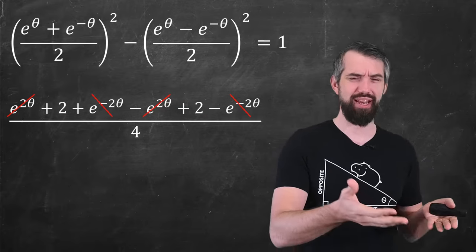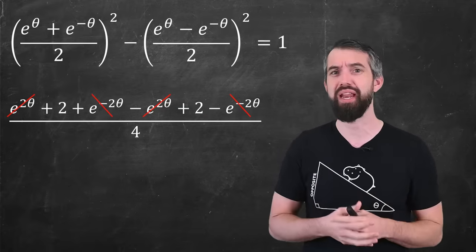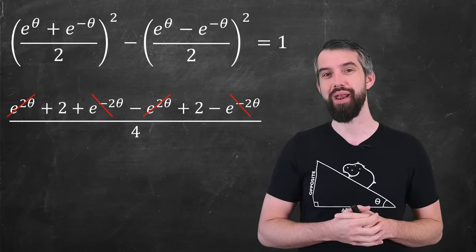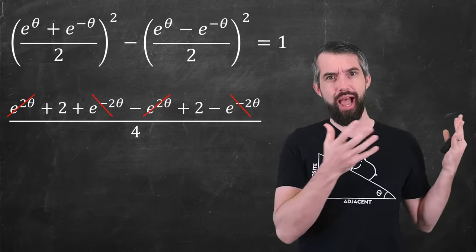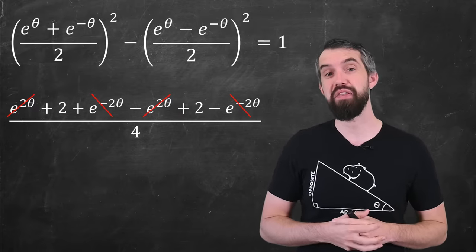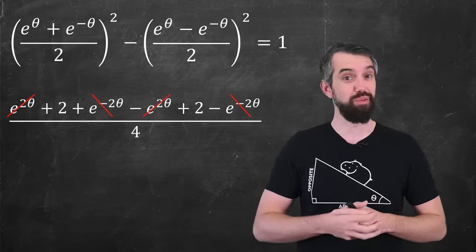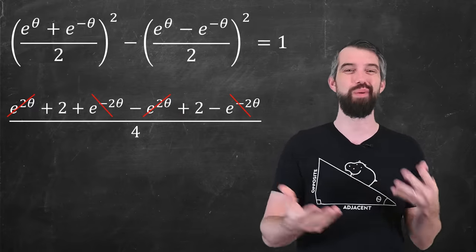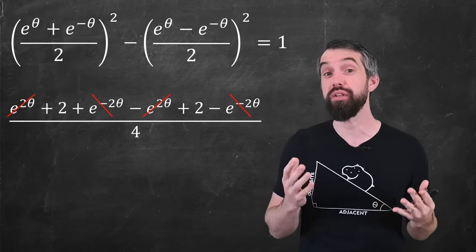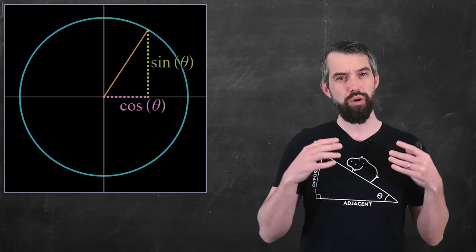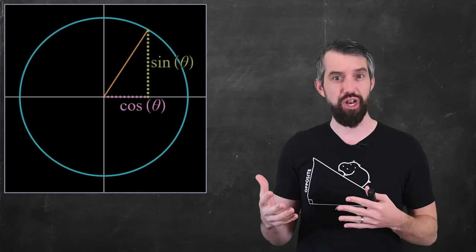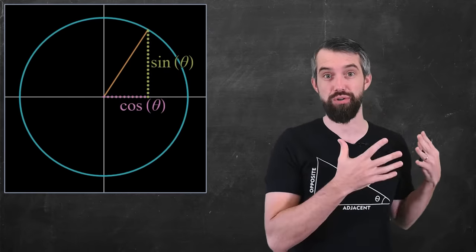You can plug in x equals tan theta and y equals secant theta yourself and verify it's also equal to 1. So it's nice that hyperbolic cosine and sine satisfy the hyperbola equation, but there are many ways to parametrize a hyperbola. To more deeply understand this connection, let's go back to the definition of the regular trig functions.